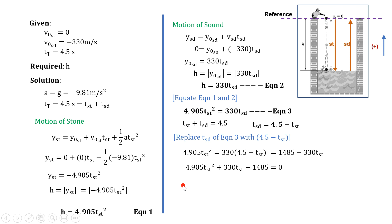So solving for t_st, we get a value equal to negative 71.51 seconds, which is absurd, and also a value of 4.234 seconds, which is the correct value.